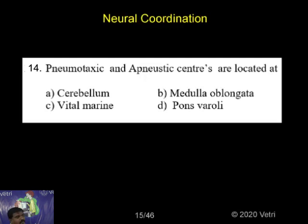The Pneumotaxic center. The Pneumotaxic center is located in the upper part of the Pons. It provides inhibitory impulses for inspiration and prevents the overexpansion of the lungs. It also helps to maintain the alternate rhythm of inspiration and expiration.